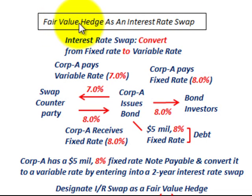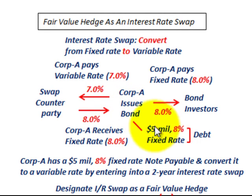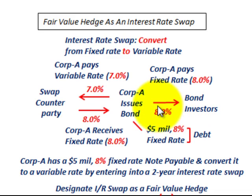What we're going to be going over here is a fair value hedge as an interest rate swap. An interest rate swap is where you've converted from a fixed interest rate on your debt to a variable interest rate. For example, Corp A issues bonds — or notes payable — worth $5 million at a fixed interest rate of 8% per year. They sell the bonds to bond investors and pay a fixed rate of 8% to those investors.